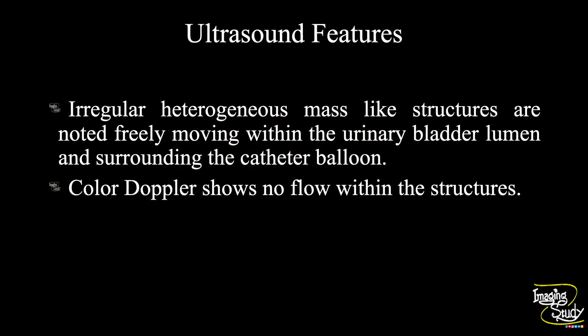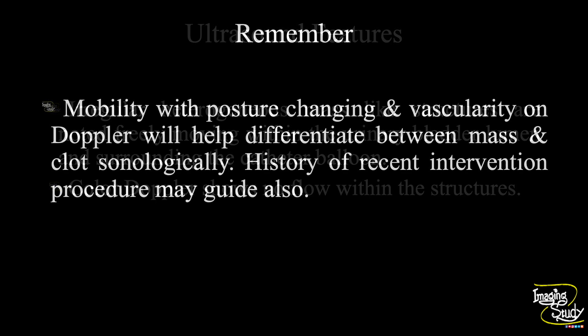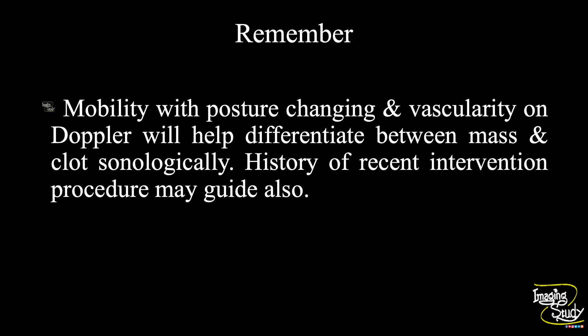In summary, mobile heterogeneous mass-like structures are noted within the urinary bladder lumen and surrounding the catheter balloon. Color Doppler shows no flow within these structures, indicating them as blood clots. Now the take-home message: mobility with posture changing and vascularity on Doppler will help differentiate between a mass and a clot sonologically. However, history of a recent intervention procedure may also guide you.